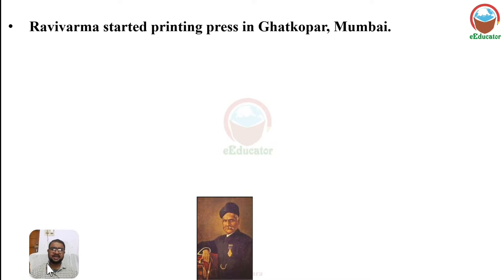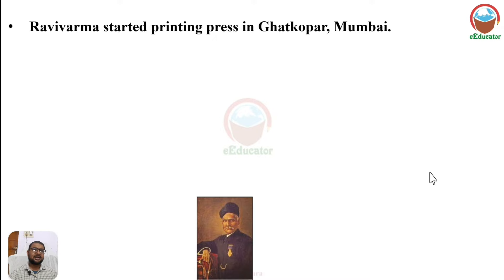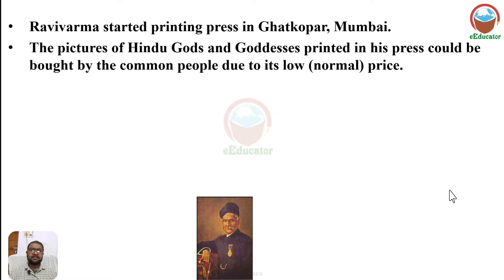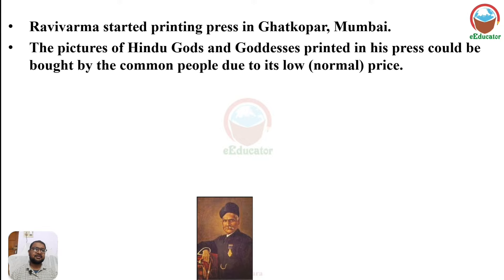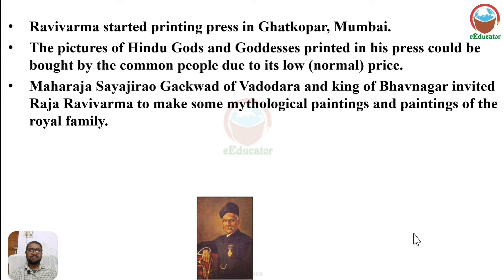Raja Ravi Verma started a printing press in Ghatkopar, Mumbai. Pictures of Hindu gods and goddesses were printed there and could be bought by common people at a normal price. This printing press was started by Raja Ravi Verma in Mumbai.